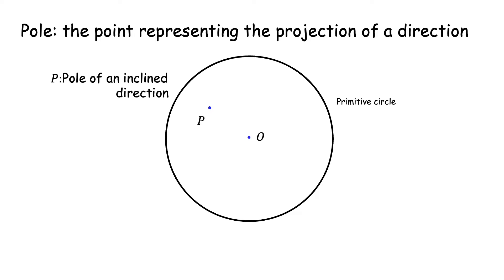A more general inclined direction will project as a point inside the primitive. P is a pole of an inclined direction.